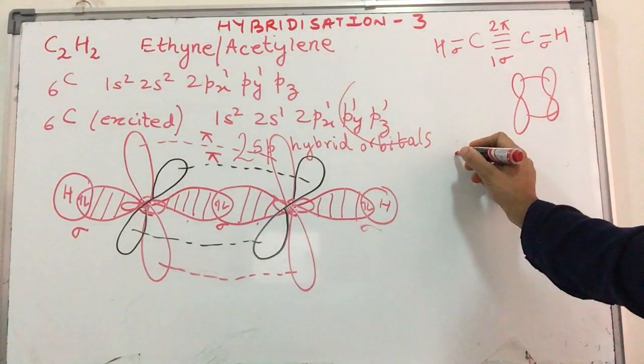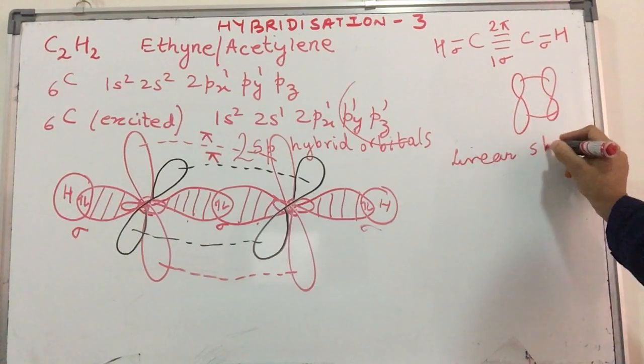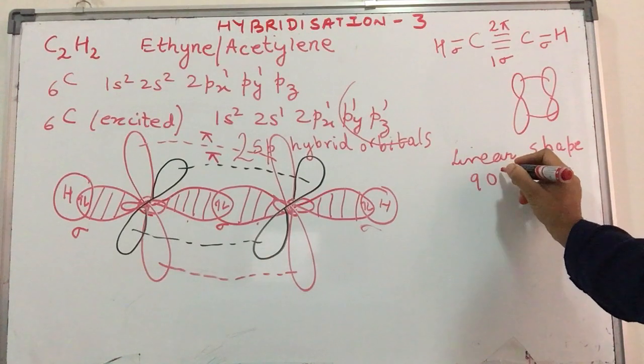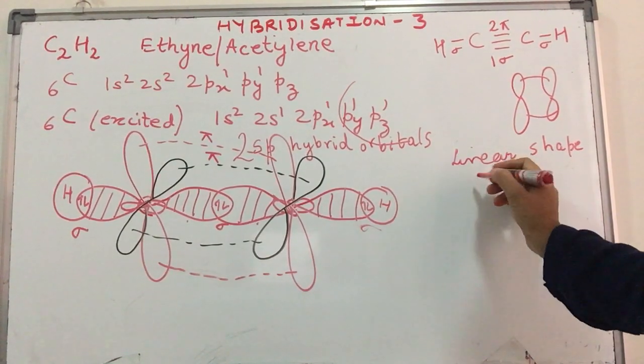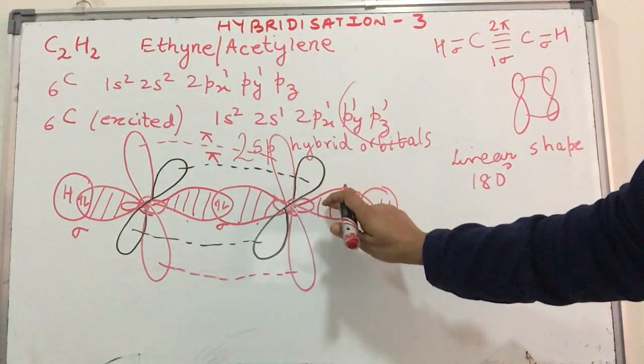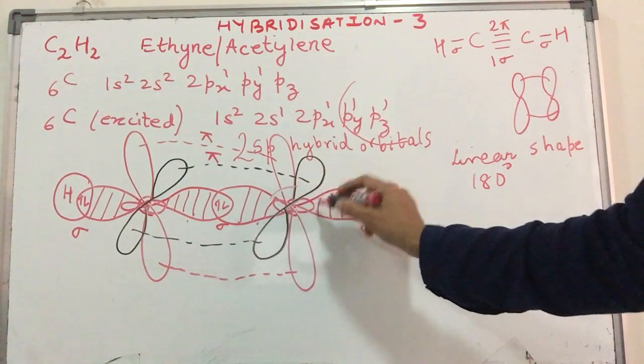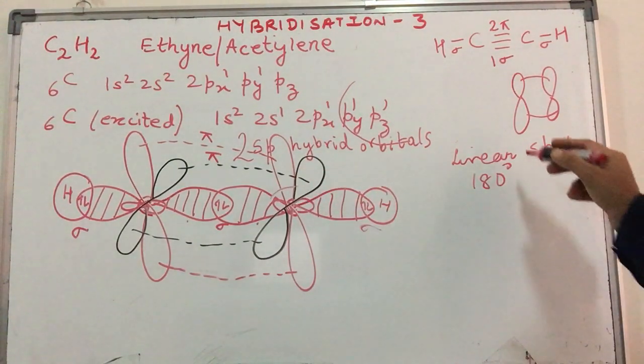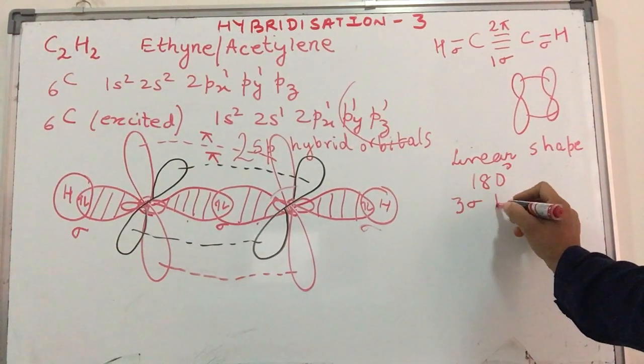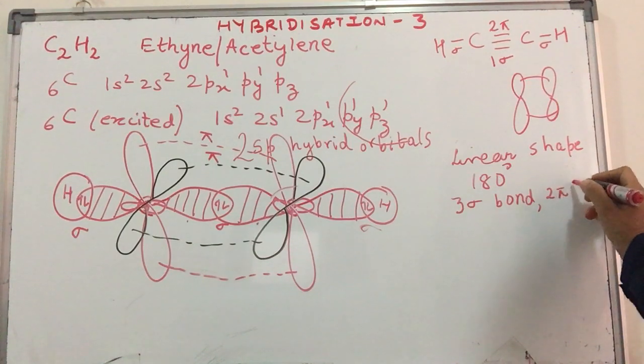We will have a linear shape, a bond angle of 90 degrees—sorry, 180 degrees. Because the two bonds are aligned, we are talking about the two bond angles which decide the shape. These are aligned at an angle of 180 degrees; that is what gives it its linear shape. We will have three sigma bonds in the molecule overall and two pi bonds.